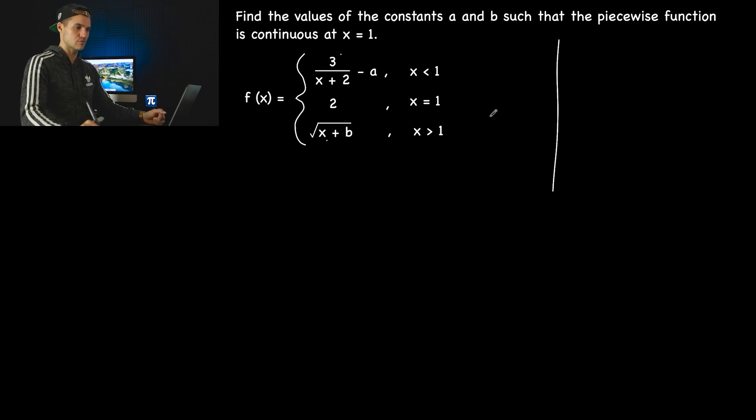Just to give you a quick visual of what's going on, at x equals 1, we're told that this point is defined with a y value of 2. So at x equals 1, there is a point right there.